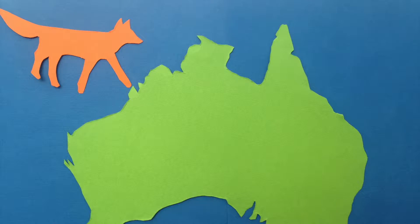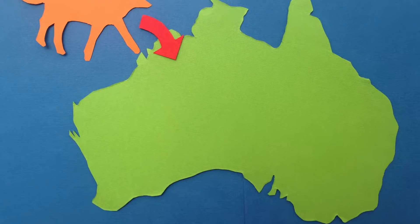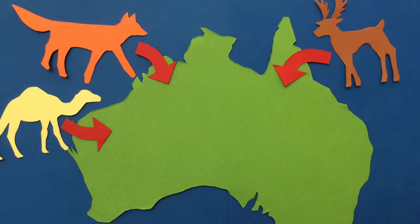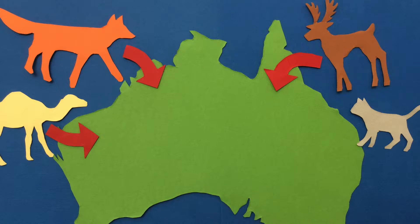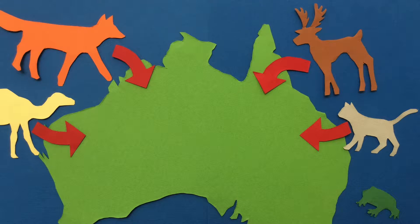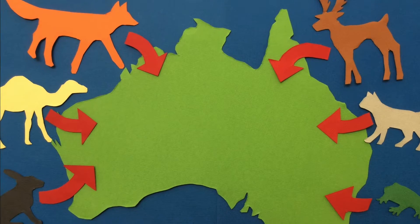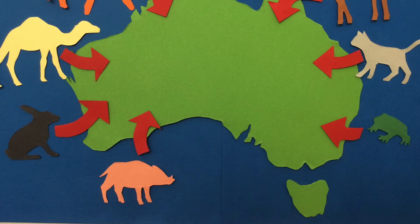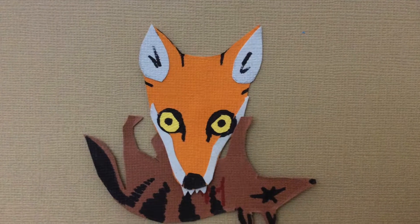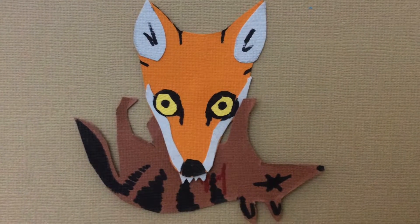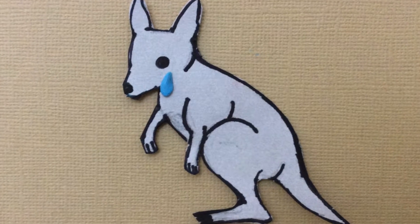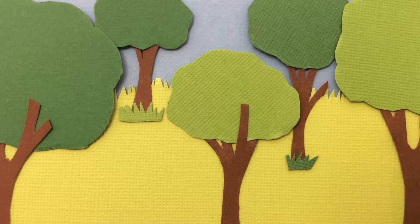Australia's biggest threat species are red foxes, feral deer, dromedary camels, feral cats, cane toads, European rabbits and feral pigs. Introduced animals affect species via predation, competition for resources and habitat loss.